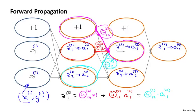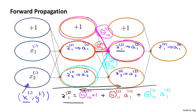It turns out that what backpropagation is doing is a process very similar to this, except that instead of computations flowing from the left to the right of this network, the computations instead flow from the right to the left, using a very similar computation. I'll explain exactly what I mean by that in a couple of slides.